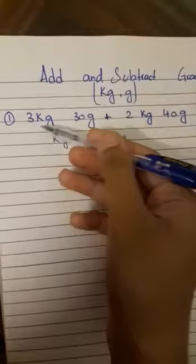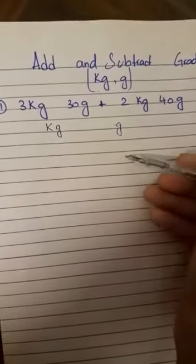3 kilograms. First, what are we going to do? We are going to write kg here and grams over here, and we have to write kg under kg and grams under grams.